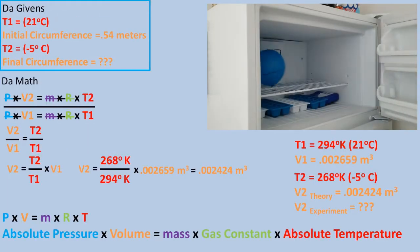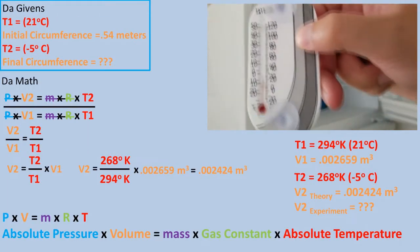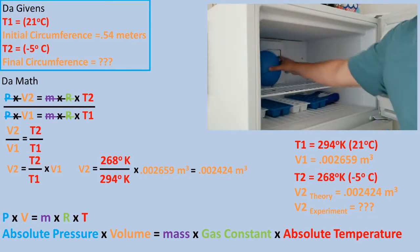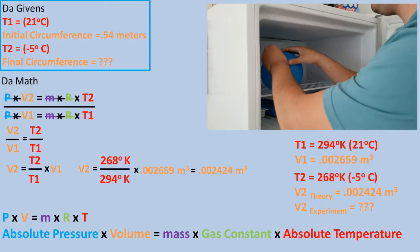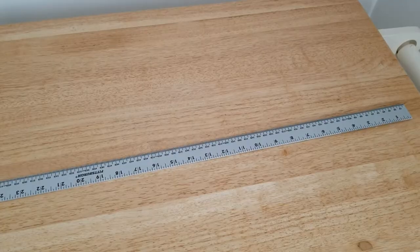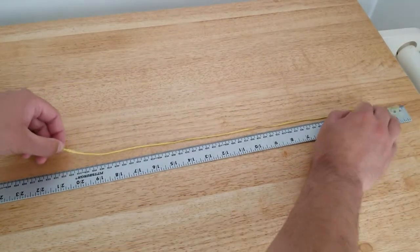So now that we have all of our values in the correct units, we can plug it into the volume two formula. We get a volume at two of 0.002424 meters cubed.